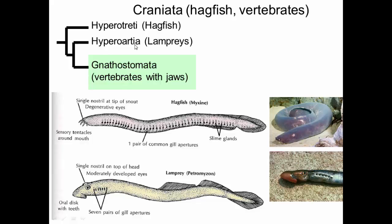This group, Hyperoartia, are lampreys. You can see they have better developed eyes. They have an oral disc that actually has teeth. They don't have the slime gland power, but you can see they're starting to evolve fins for a bit more sophisticated swimming. They're not more evolved than hagfish because both have been around for about the same amount of time, but they have evolved features that are a bit more like fish, which is going to be here in Gnathostomata.